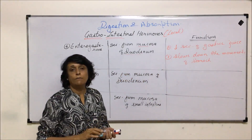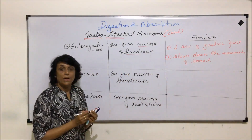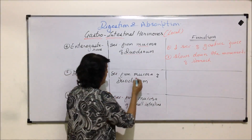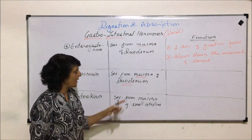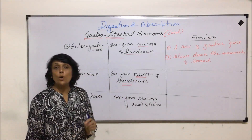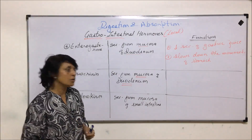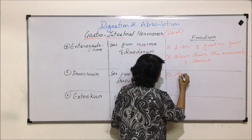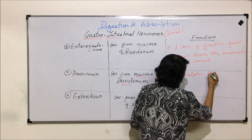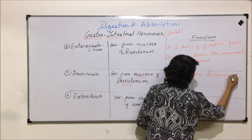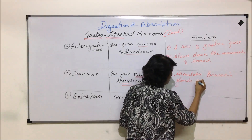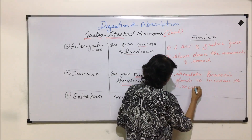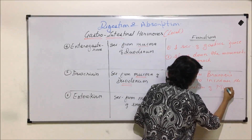The next hormone is duocrinin. It is also secreted from the mucosa of the duodenum. This hormone acts on Brunner's glands to stimulate them and increase the secretion of mucus, so mucus production is increased.